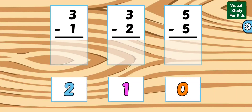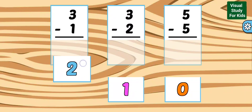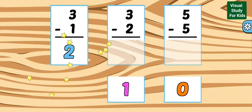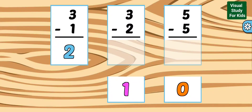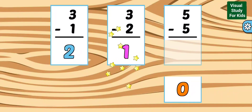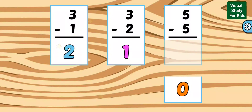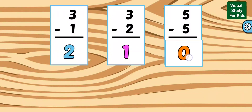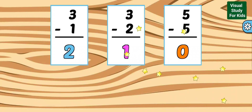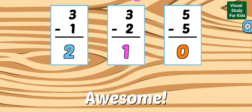Match each equation with the correct answer. 2: 3 minus 1 equals 2. 1: 3 minus 2 equals 1. 0: 5 minus 5 equals 0. Awesome!